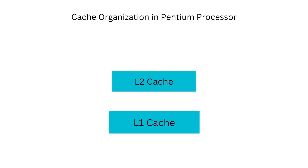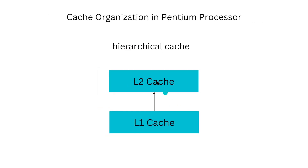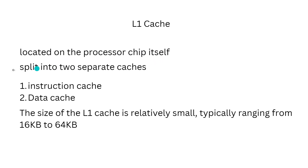The Pentium processor has a hierarchical cache organization consisting of two levels of cache: the L1 cache and the L2 cache. The L1 cache is located on the processor chip itself and is split into two separate caches — the instruction cache and the data cache. The instruction cache stores frequently accessed instructions, while the data cache stores frequently accessed data. The size of the L1 cache typically ranges from 16 kilobytes to 64 kilobytes, but its proximity to the processor allows for faster access times.